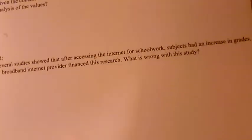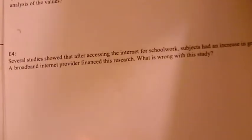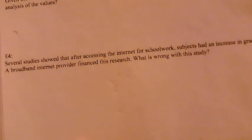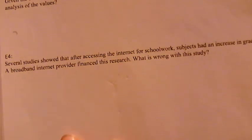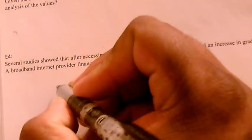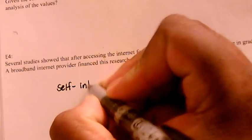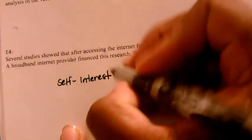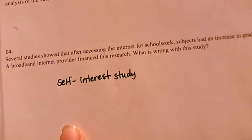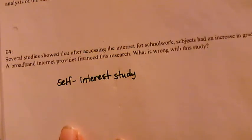Now this example: several studies show that after accessing the internet for schoolwork, subjects had an increase in grades. A broadband internet provider financed this research. What's wrong with this study? The broadband internet provider financed the research, so this would be a self-interest study. The broadband internet provider was the one that financed the research to conduct that study — they wanted to do it themselves, so it's self-interest.